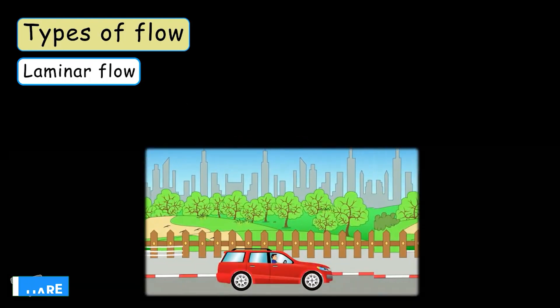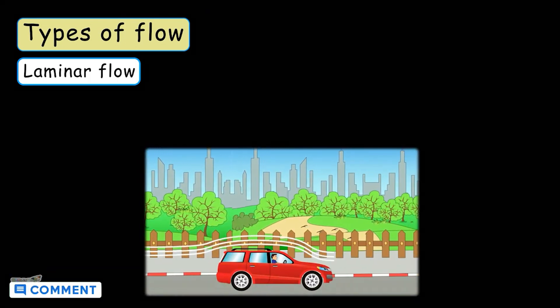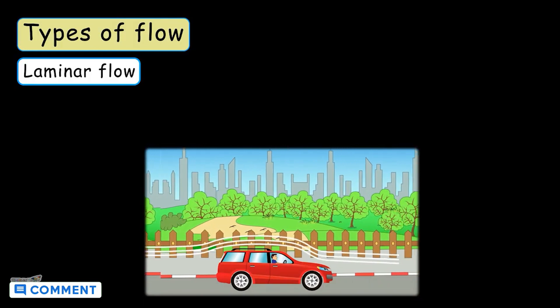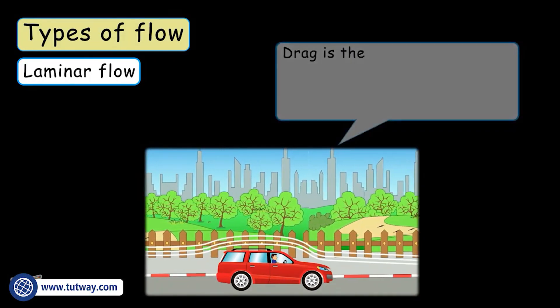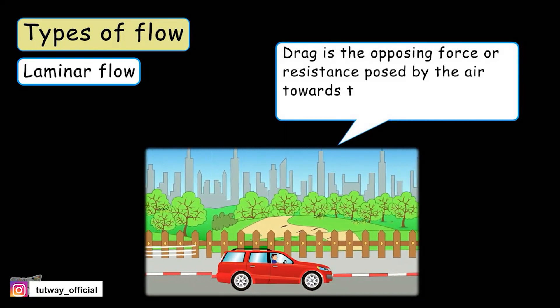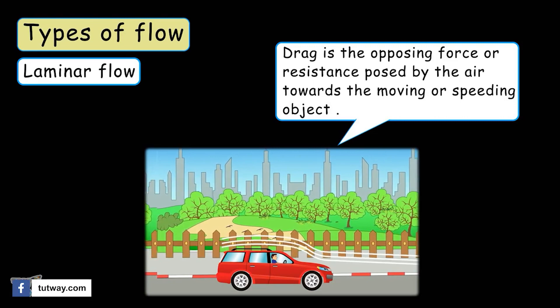Flow of air along the moving vehicle is laminar flow of air. It reduces drag in the case of vehicles and makes them more efficient. Now, what is drag? It is the opposing force or resistance posed by the air towards a moving or speeding object.